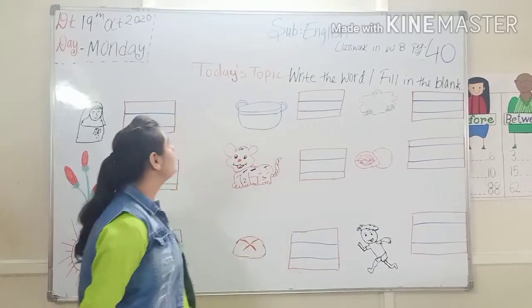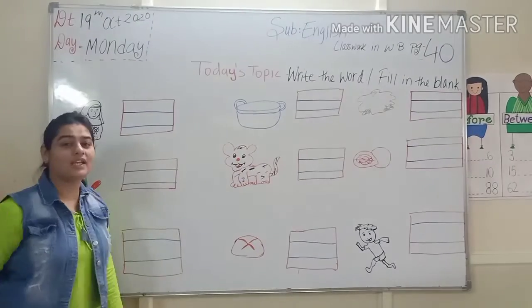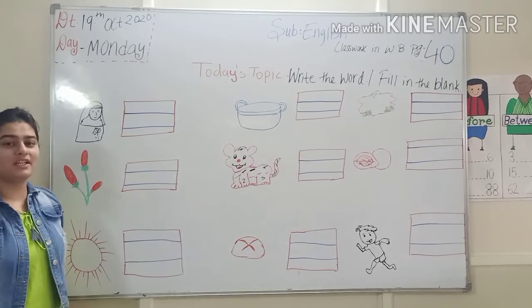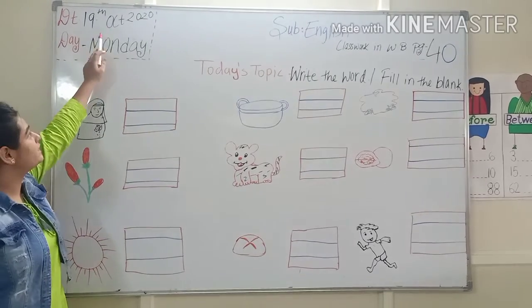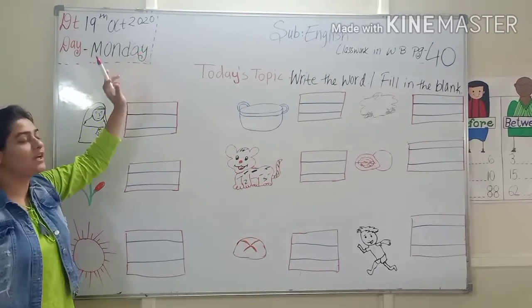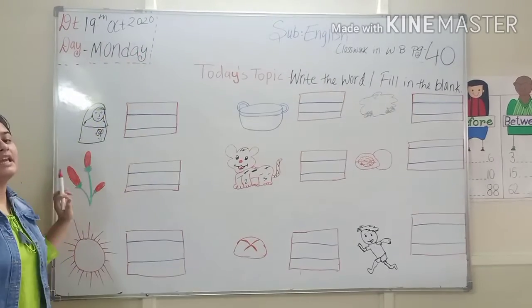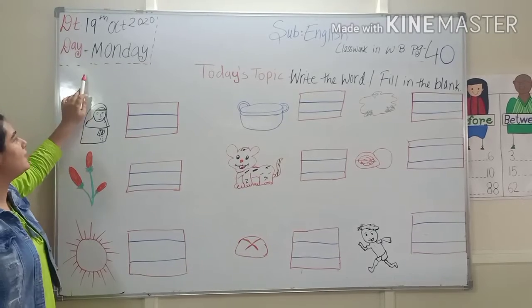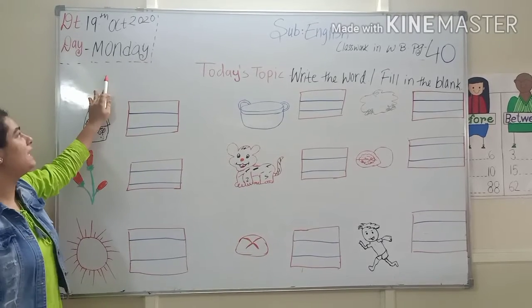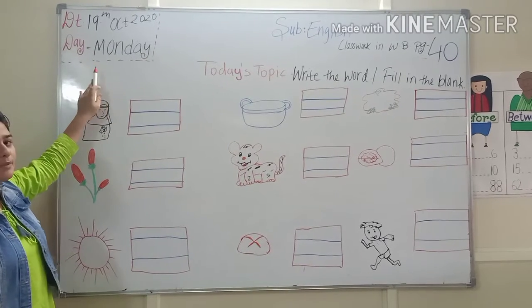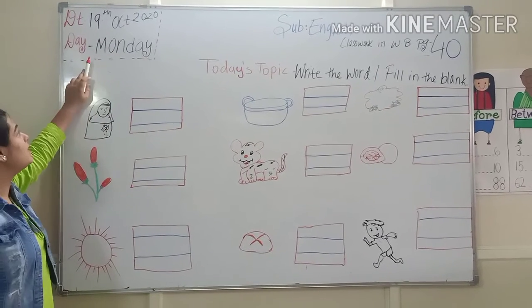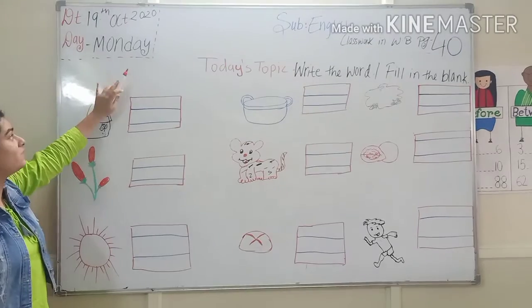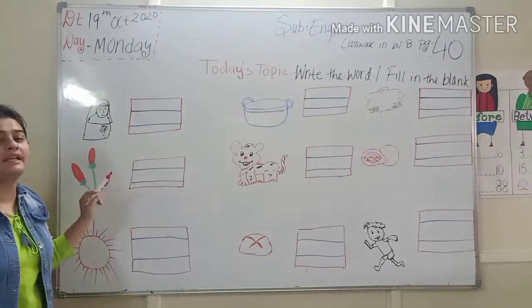First of all, which date is today, kids? Tell me which date is today. Yes, it is 19th October 2020. And which day is today, kids? Monday. Spelling of Monday, kids — repeat with me: M-O-N-D-A-Y. Monday.